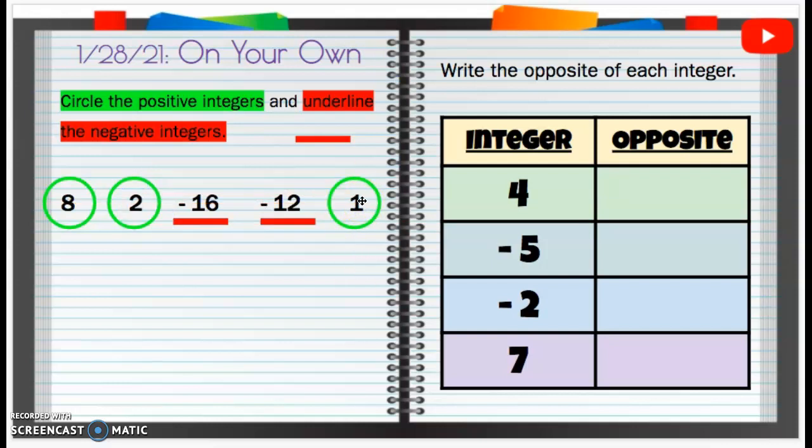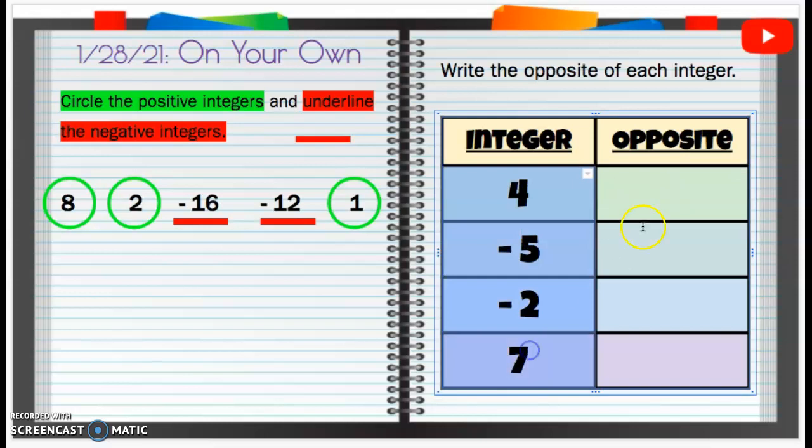Now we're going to write the opposite of each integer. So we have the integer, which is 4. The opposite of a positive 4 is going to be a negative 4.